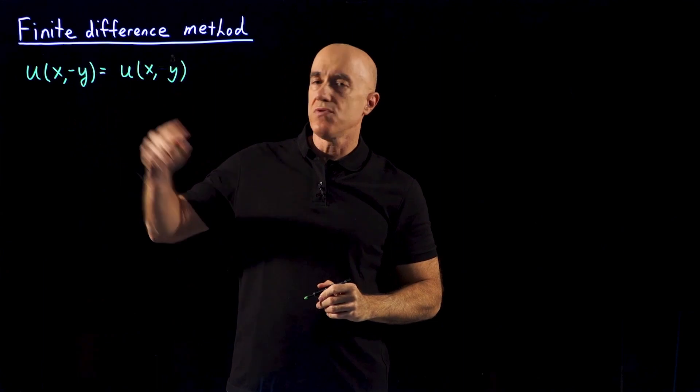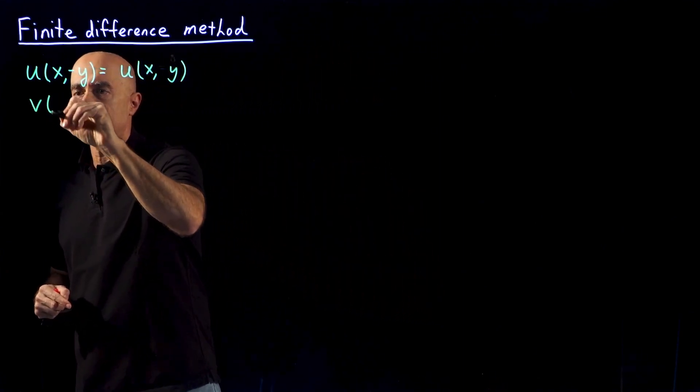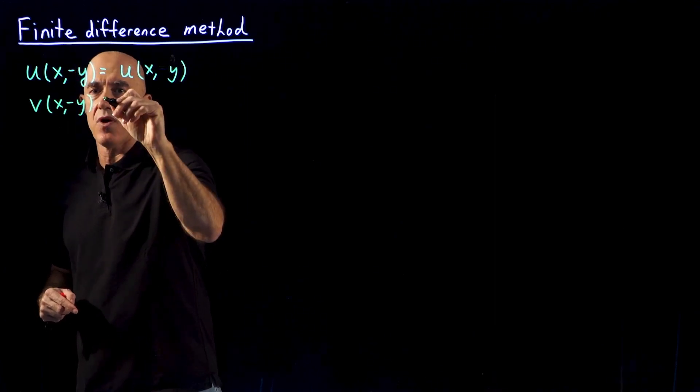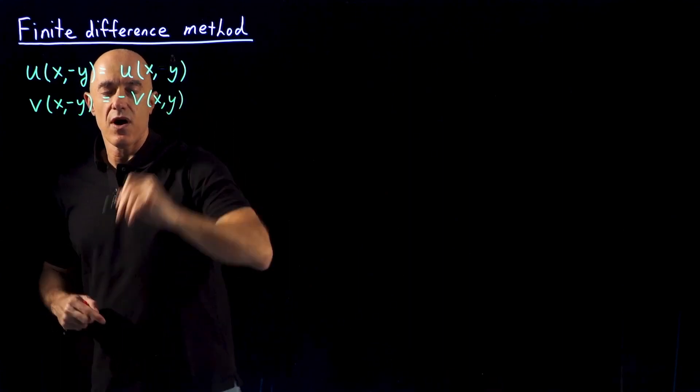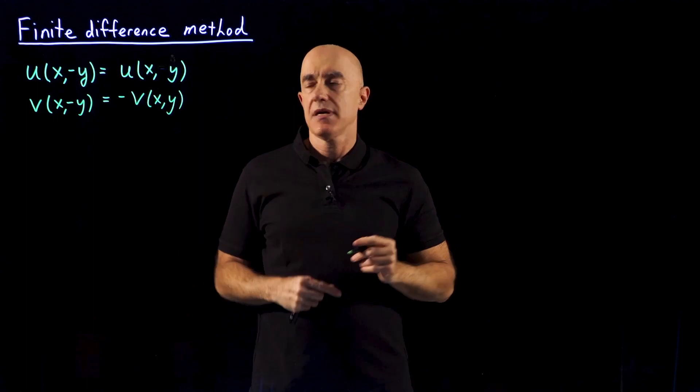So we have u as an even function, while the vertical velocity has opposite signs. So v(x,-y) equals -v(x,y). If it's flowing down on the top, it's flowing up in the bottom.